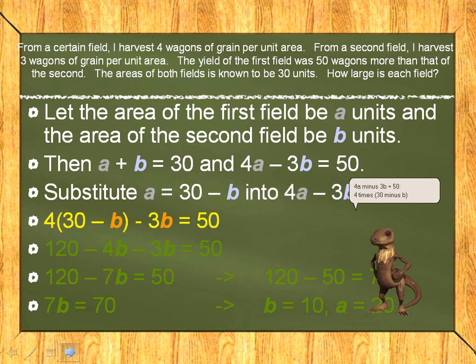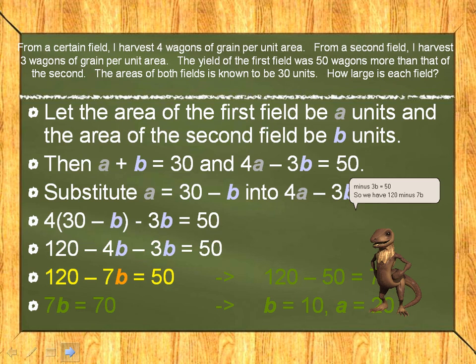Four times 30 minus b minus 3b equals 50 becomes 120 minus 4b minus 3b equals 50. So we have 120 minus 7b equals 50, which can be written as 120 minus 50 equals 7b, or 7b equals 70.